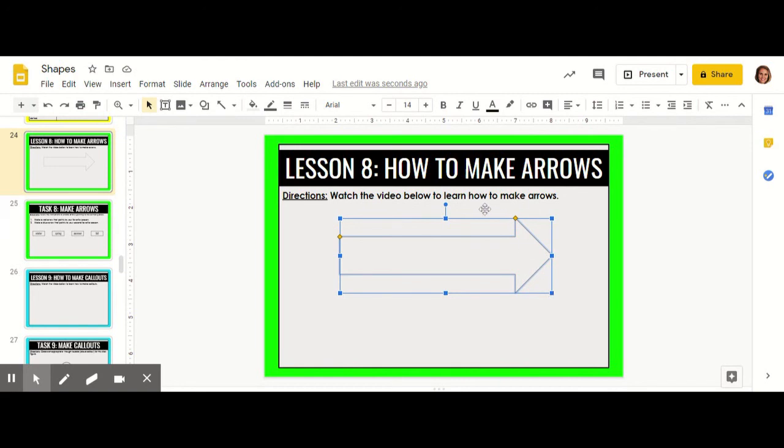You can change the direction that your arrow is pointing by using the rotate handle. All of these handles to change the size are squares. The rotate handle is a little bit further up and it's a circle. Click that and you can change the direction that your arrow is pointing.